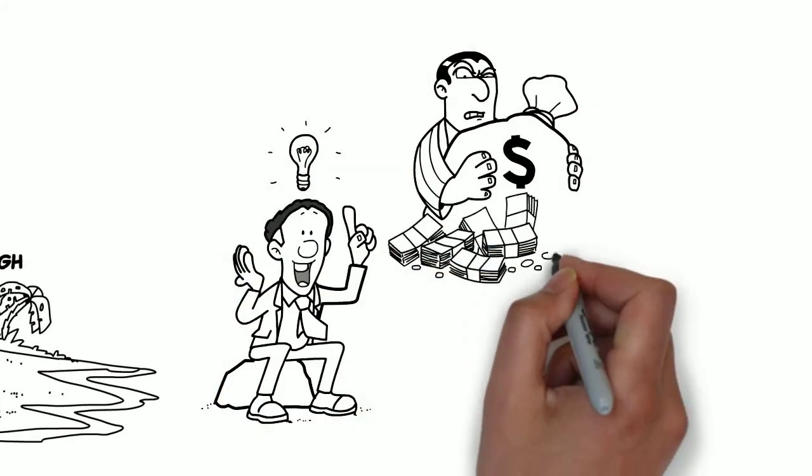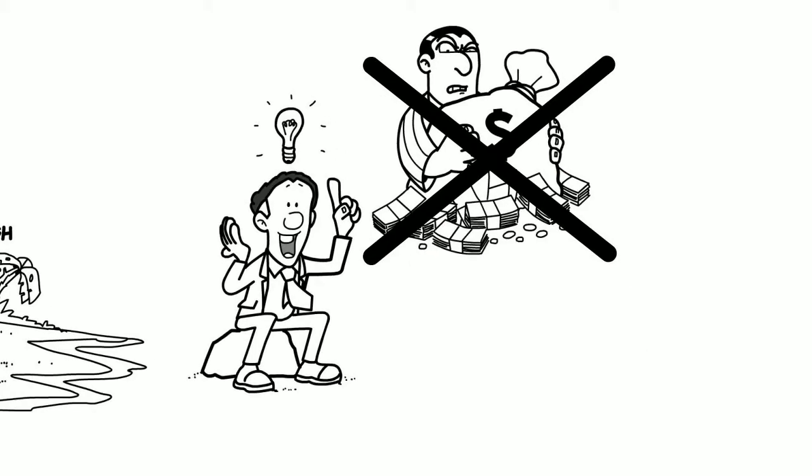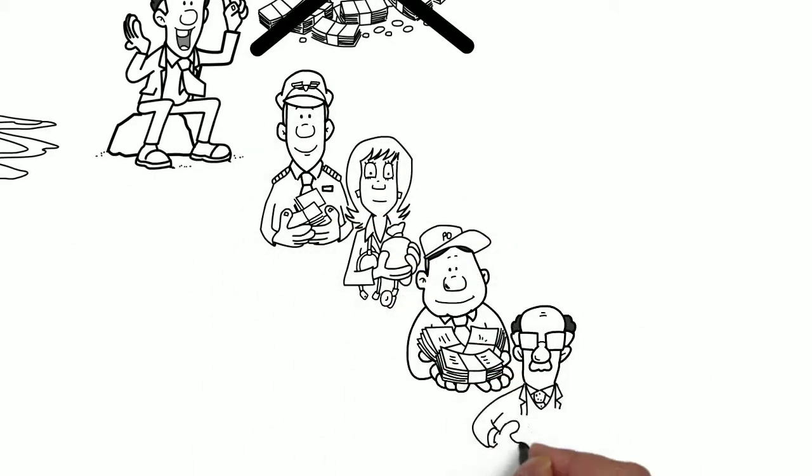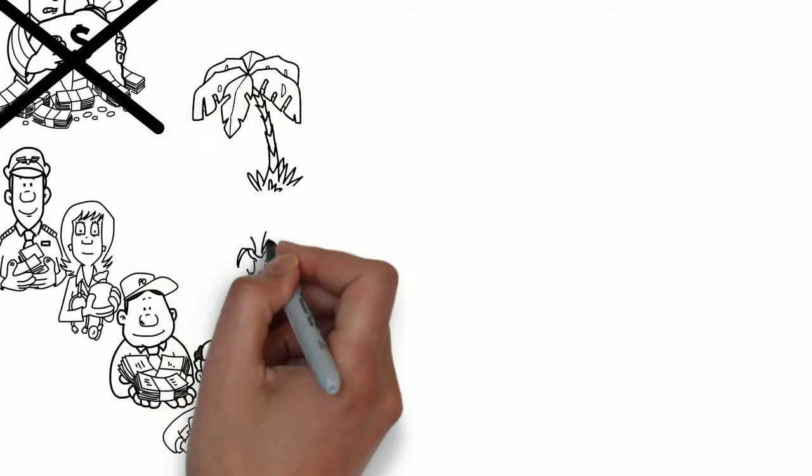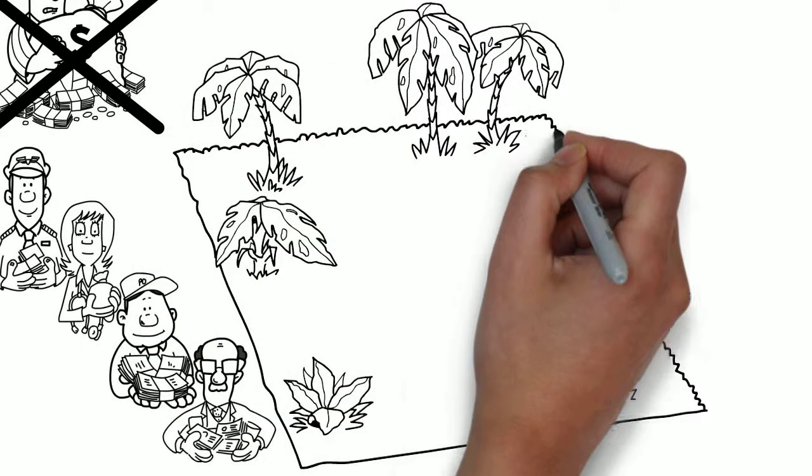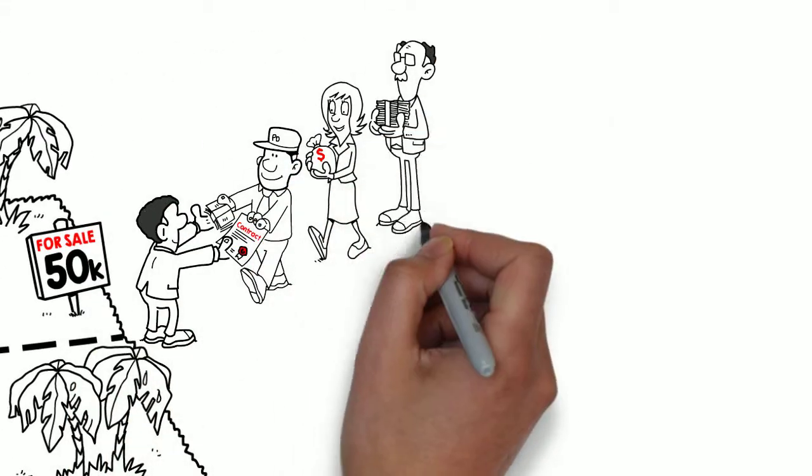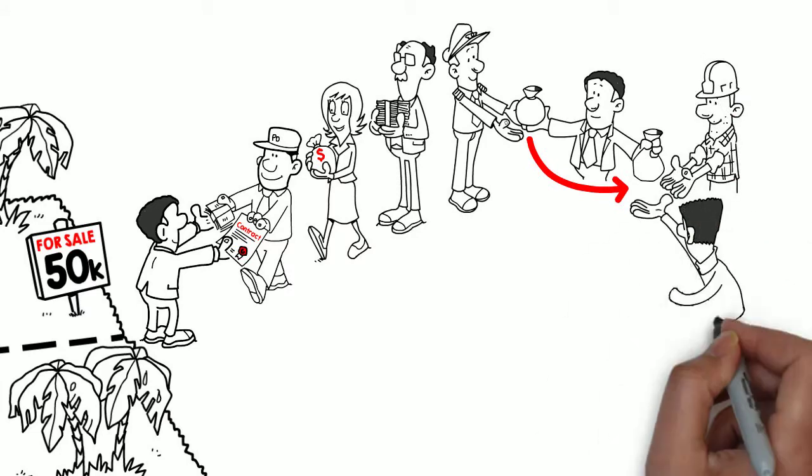Instead of going to a bank to get one large sum of money, he would go to private investors and get them to invest smaller amounts of money. So John decided to sell some of his residential plots to investors, just like you, and guaranteed to buy them back at a higher price once the development was nearing completion.